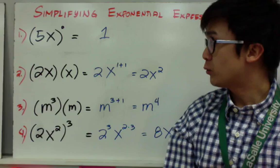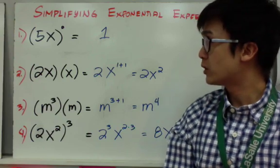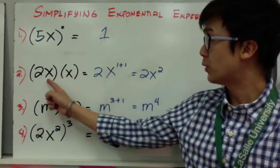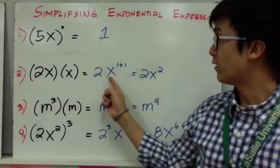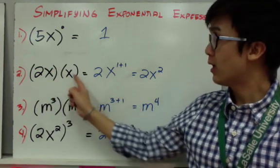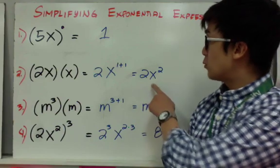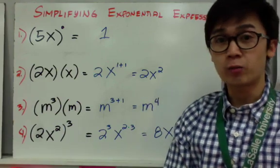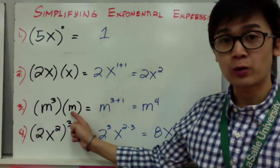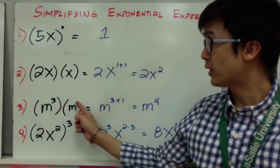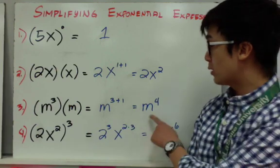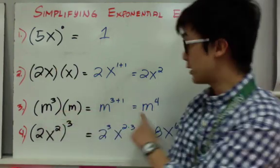For number 2, we have 2x times x. When multiplying expressions with the same variable, all you have to do is add the exponents. So you have 2 times x raised to 1 plus 1, because both x's have an exponent of 1. The final answer is 2x squared. For number 3, using the product rule, m cubed times m — we add the exponents 3 plus 1 — so the simplest form is m to the fourth.